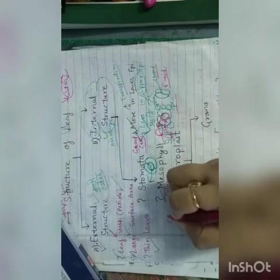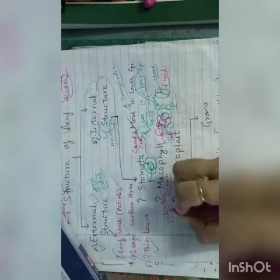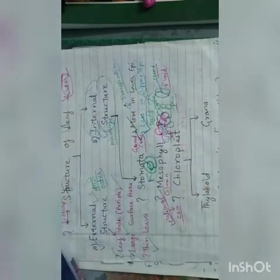Next point is mesophyll cells. Mesophyll cells are photosynthetic parenchyma cells present between upper and lower epidermis. Mesophyll cells are column-like cells that are very rich in chloroplasts. Mostly photosynthesis occurs in the palisade layer, meaning in mesophyll cells.